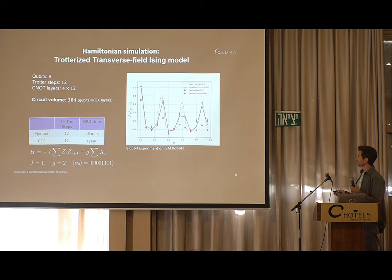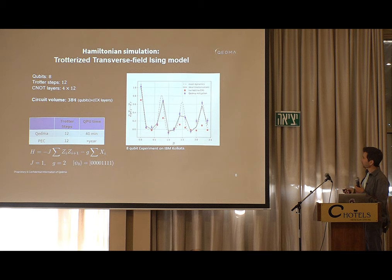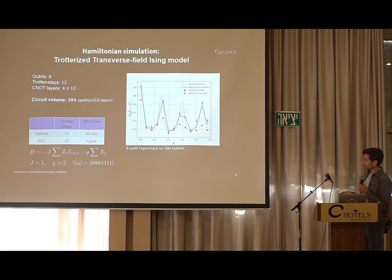Using simple standard Pauli twirling, the signal decays as expected. We get this unbiased output up to statistical error bars.